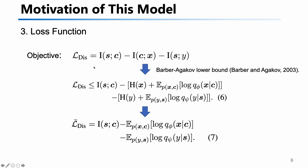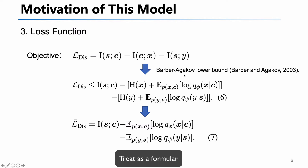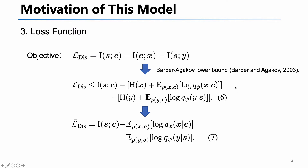There is a problem: we cannot calculate mutual information directly because it is intractable. So we use this method to have the lower bound of the second and third items of the loss, and the loss becomes like this.